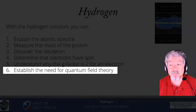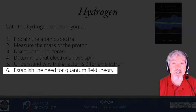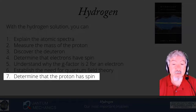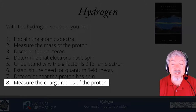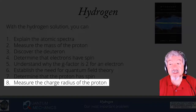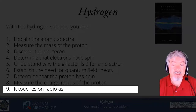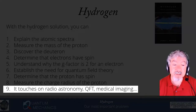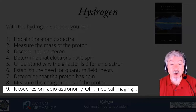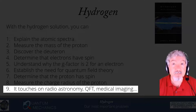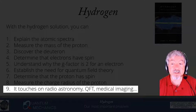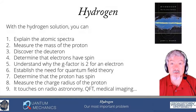We can establish the need for quantum field theory, in part by looking at measurements of the g-factor, but also by looking at something called the fine structure of hydrogen. We can determine that the proton has spin, which is used in radio astronomy. And we can measure the charge radius of the proton simply by looking at light — we can determine not only the proton mass but the effective size of the proton as well. Hydrogen touches on the fields of radio astronomy, quantum field theory, medical imaging like MRI, and so forth. Many of the most important applications of quantum mechanics actually derive from looking at the exact solution of hydrogen.